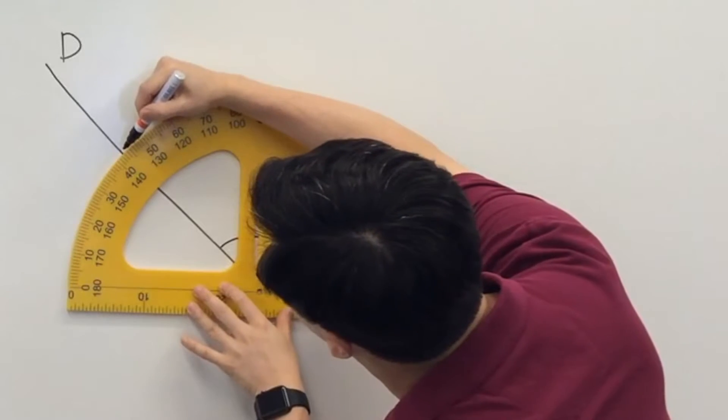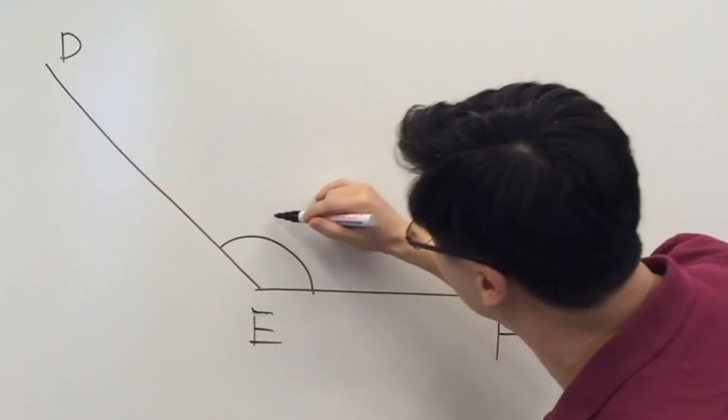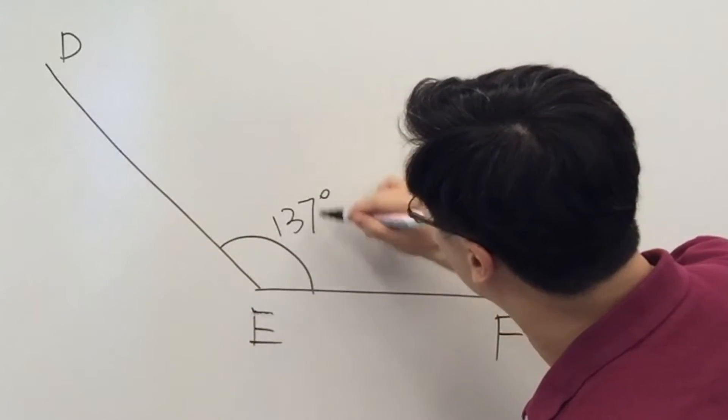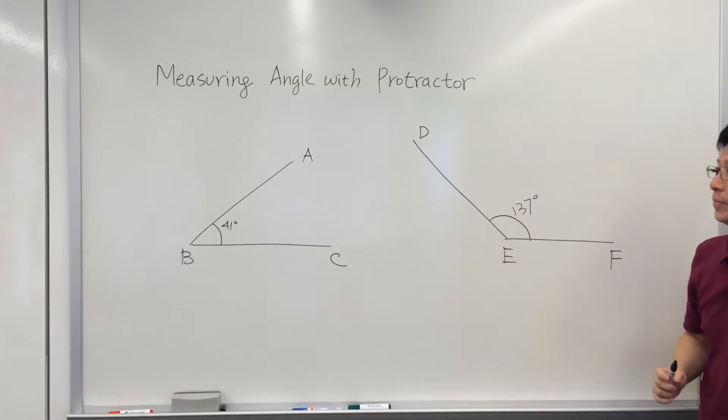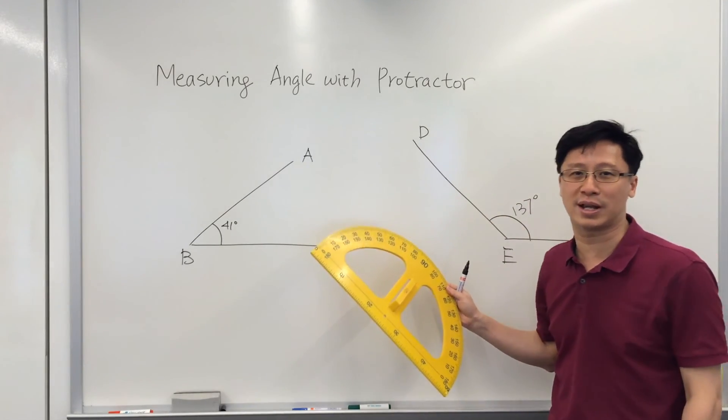And this angle, this is just about 137 degrees. So the protractor is a very useful tool for measuring the size of an angle.